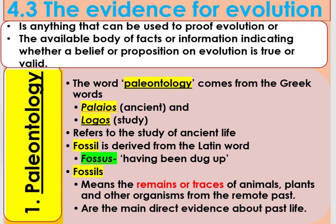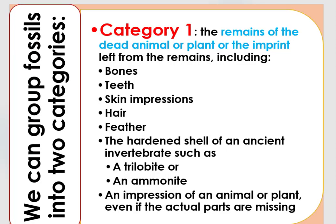What is a fossil? Fossil is derived from the Latin word fossus, which means having been dug up. A fossil means the dead remains or traces of animals, plants, and other organisms from the remote past. Fossils are the main direct evidence about past life. We can group fossils into two main categories.